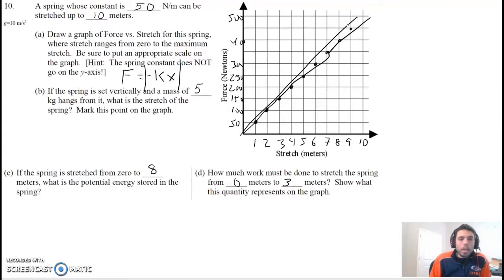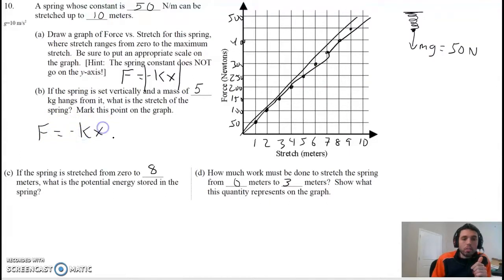Part B, if the spring is set vertically and a mass of 5 kilograms hangs from it, what is the stretch of the spring? We've got to think a little more deeply here. If we hang a 5 kilogram mass from it, what's the only thing pulling the mass down? It's weight. Let's draw a free body diagram. There's a spring attached to the wall or the ceiling, and we've got a 5 kilogram mass pulling it down. Mg pulling it down, Mg is going to be 50 newtons, mass 5 times 10 is 50 newtons. If the force being applied to the spring is 50 newtons, that means the spring force is also 50 newtons.